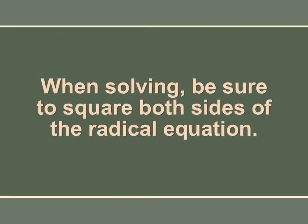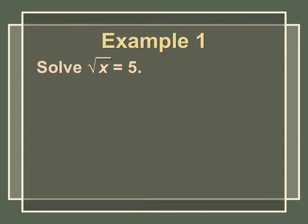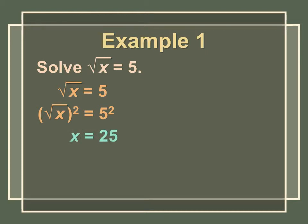When you are solving a radical equation, we have to make sure that we square both sides, because if you do something to one side, you're required to do it to the other side. For example, if we have the square root of x equals 5 and we want to square the square root of x to undo the square root, we also have to square the 5. On the left-hand side, the square undoes the square root, leaving x. On the right-hand side, 5 squared is 25.